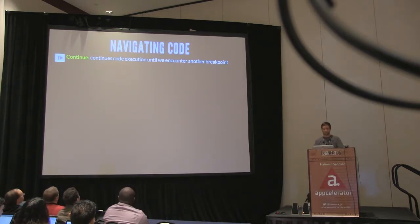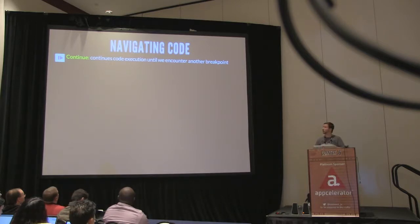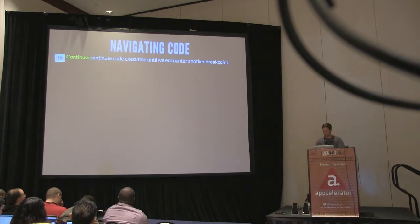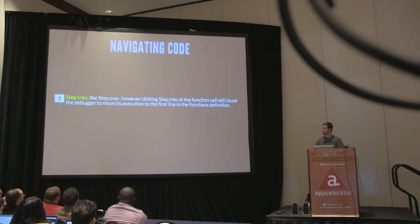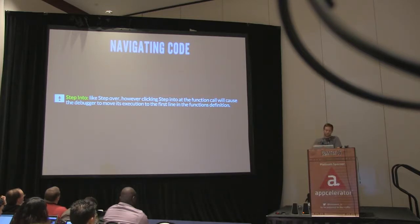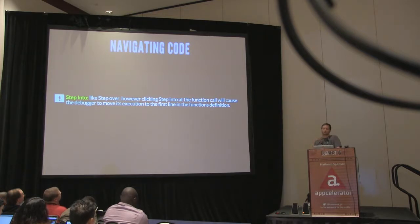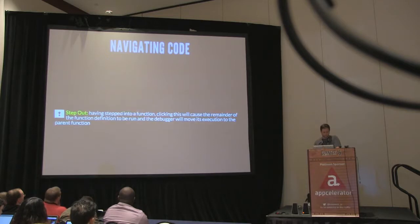Continue is the play/pause button — you can pause and play your code. When you hit a breakpoint it stops, and hitting play continues execution. Step over goes line by line through your code. Step into is like step over but if it encounters a function it actually jumps into that function. Step out, once you're inside a function or child scope, brings you back to the parent level.